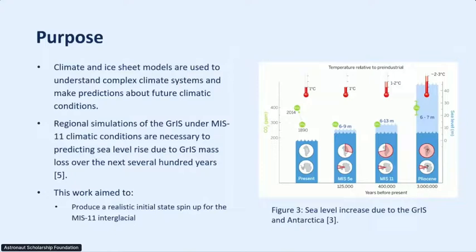This research is important because we want to know what's going to happen over the next several hundred years. Where can people live? Where will the sea level be too high? Climate and ice sheet modeling helps us understand these really complex climate systems in a way you wouldn't be able to do otherwise. We do regional simulations just looking at the Greenland area, which gives us a really good idea of what's going to happen for specific areas in Greenland — coastal areas, inland areas.